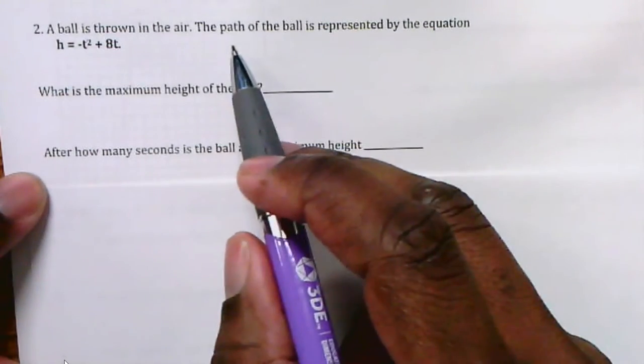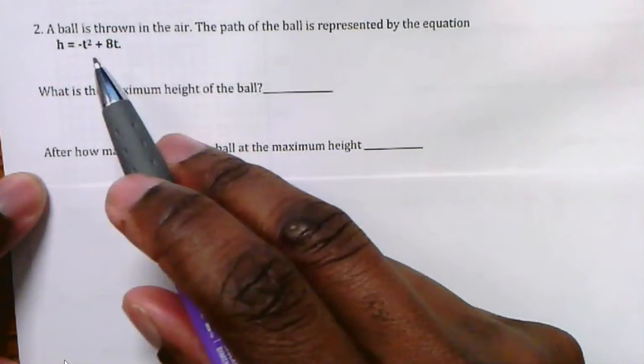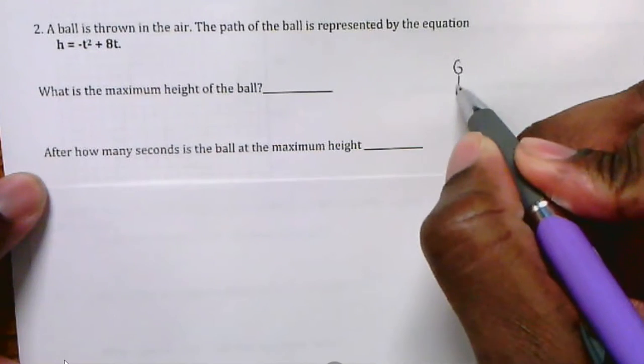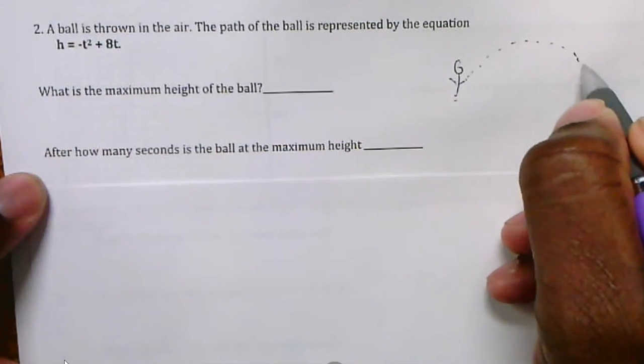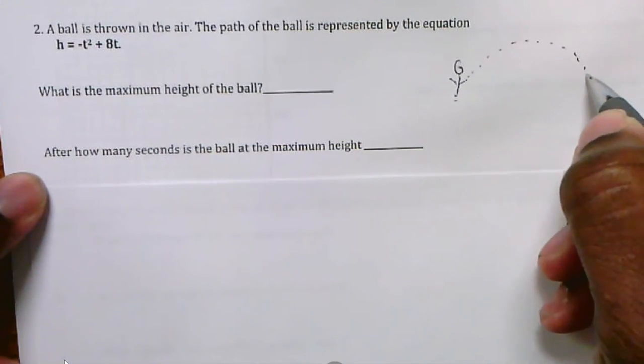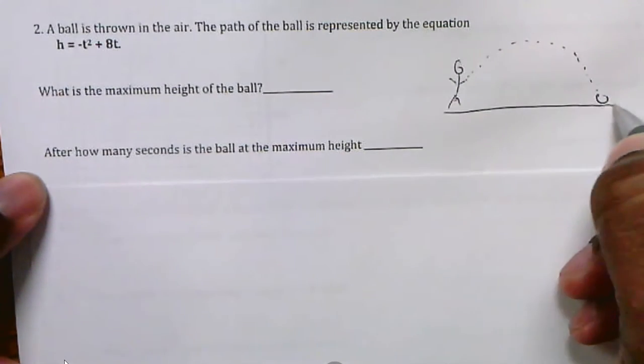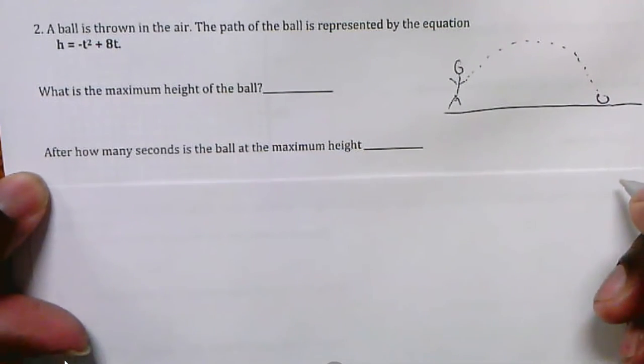Number 2 says the ball is thrown in the air and the path of the ball is represented by that equation. So here's some guy and he's throwing a ball. The ball is probably flying a path like that until it hits the ground. That's basically what happens to the ball.